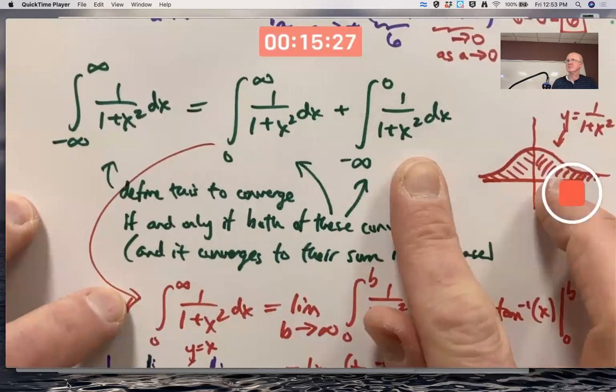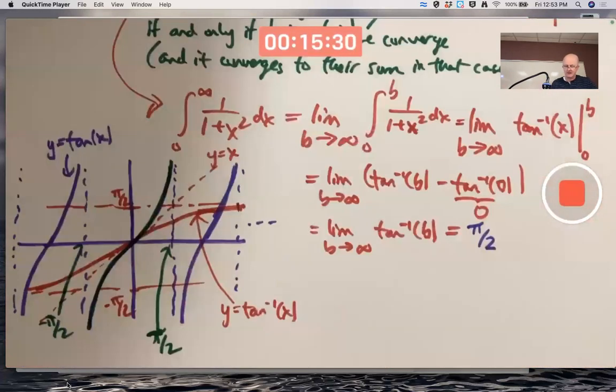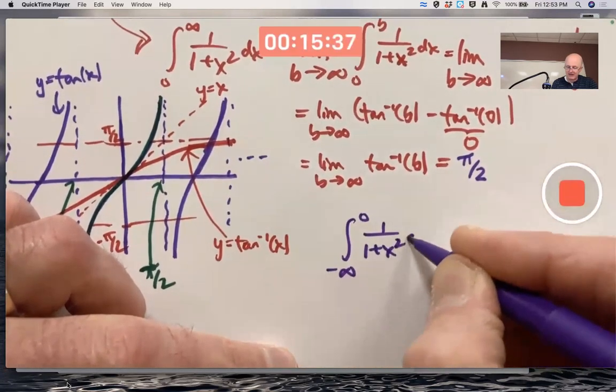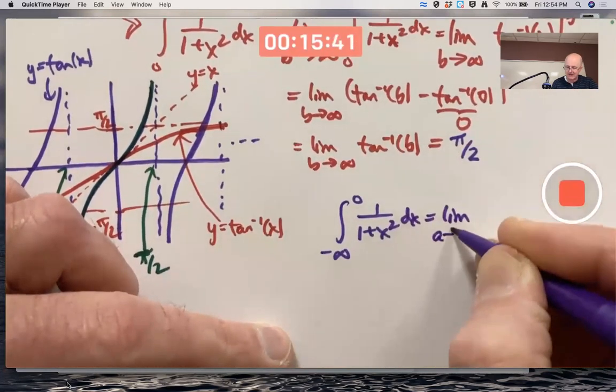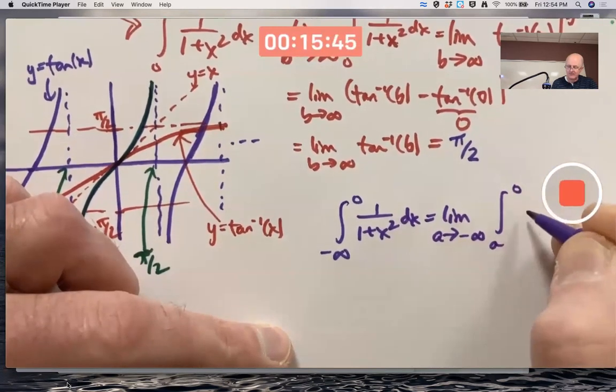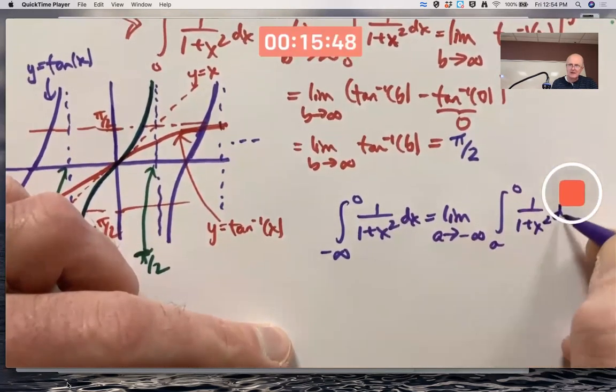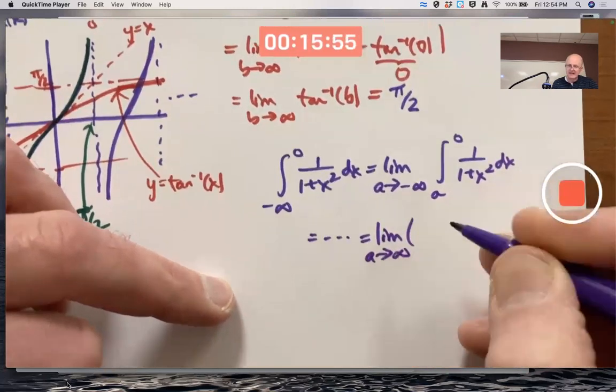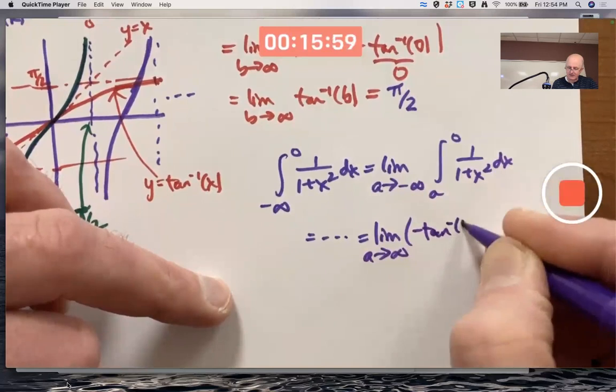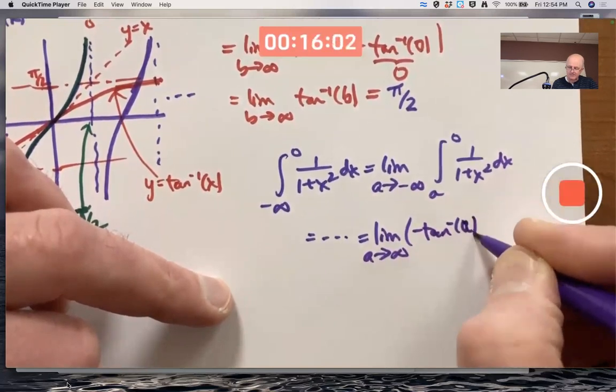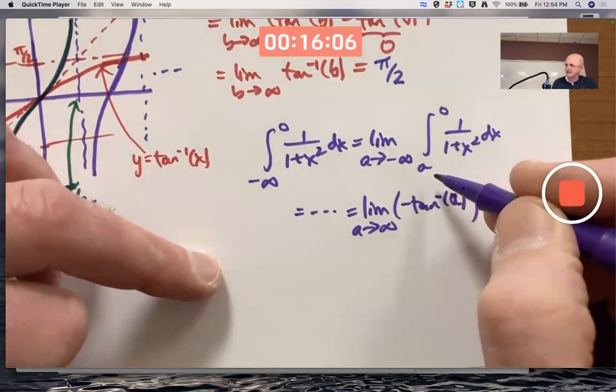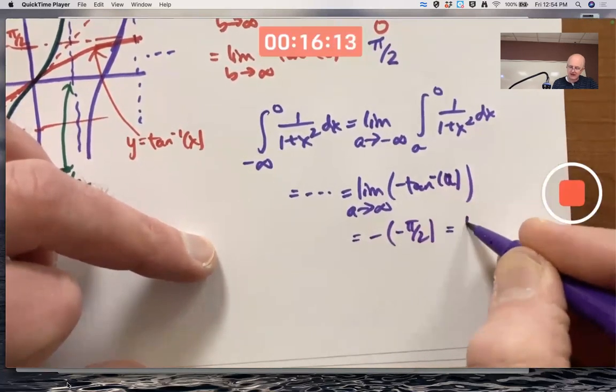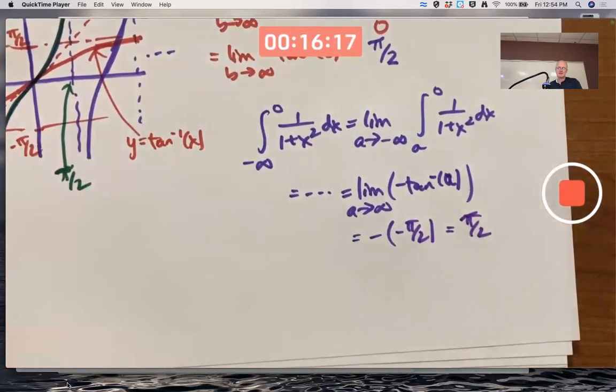Likewise, the other integral also equals pi over 2. I'm not going to do it, but if you were going to do it, you'd have to write it as a limit, as the bottom limit goes to minus infinity. Maybe you'd write limit as a goes to minus infinity of the integral from a to 0. And what you would end up getting in the end is the limit as a goes to minus infinity. You'd actually get a negative inverse tangent of a because with the fundamental theorem of calculus, you would be subtracting what you get when you plug in a because it's the bottom limit of integration. And this is going to be negative of negative pi over 2, and that's positive pi over 2. So you still get pi over 2 as well, and that makes sense by symmetry of the graph.